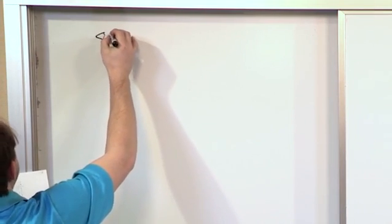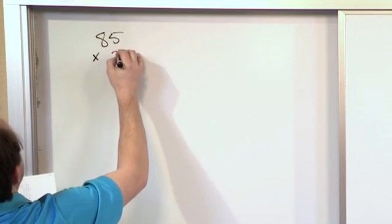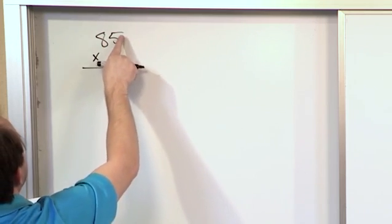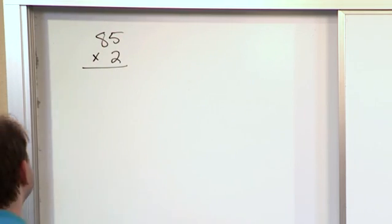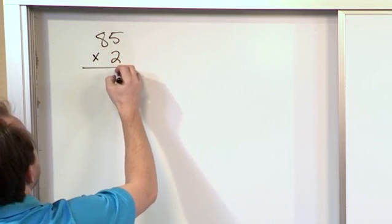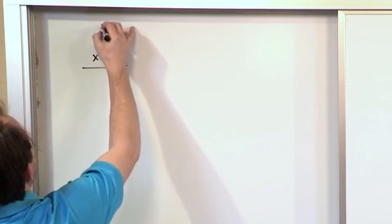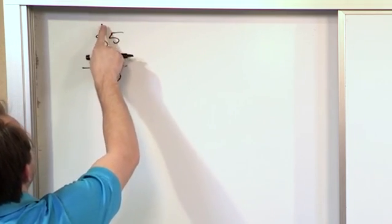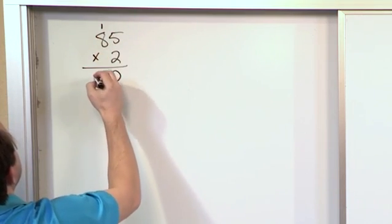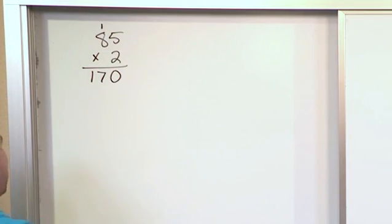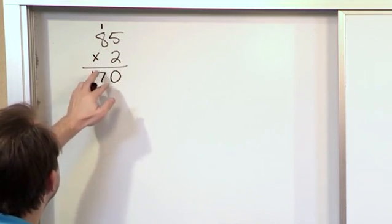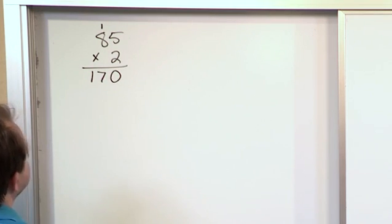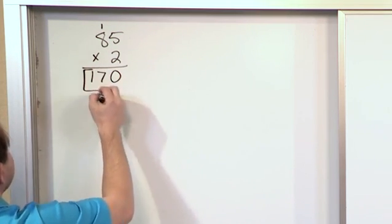What if we're doing 85 times 2? We want to line everything up so that the 2 is underneath the 5. So the first thing we do is say 2 times 5 is 10. We put a 0, and then we carry a 1 to the next column. And then we do 8 times 2 is 16, and we add what we carried. That will be 17, so we write 170. There's no other digits anywhere here to multiply by, so the answer we get is just 170. That's the final answer.